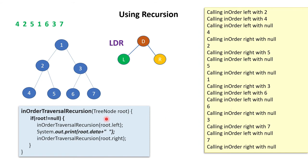Now I will show you the complete call stack of this recursive function. First it starts with the root node, and as the root node is not null, we call the same function with root.left, so root.left is 2. Then we call inorder with 2, then inorder with 4, because we are going inside until we get the leftmost element which is 4. After that the call stack comes back to 2, goes right, and prints everything. The call stack is maintained like this and prints 4, 2, 5, 1, 6, 3, 7.